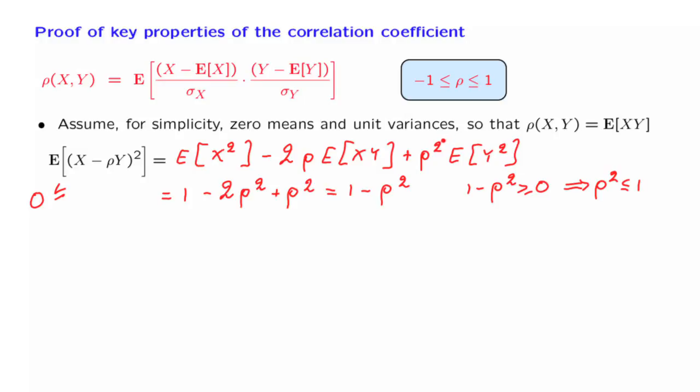Now, let us look at an extreme case when the absolute value of ρ is equal to 1. What happens in this case? In that case, this term is 0. And this implies that the expected value of the square of this random variable is equal to 0.